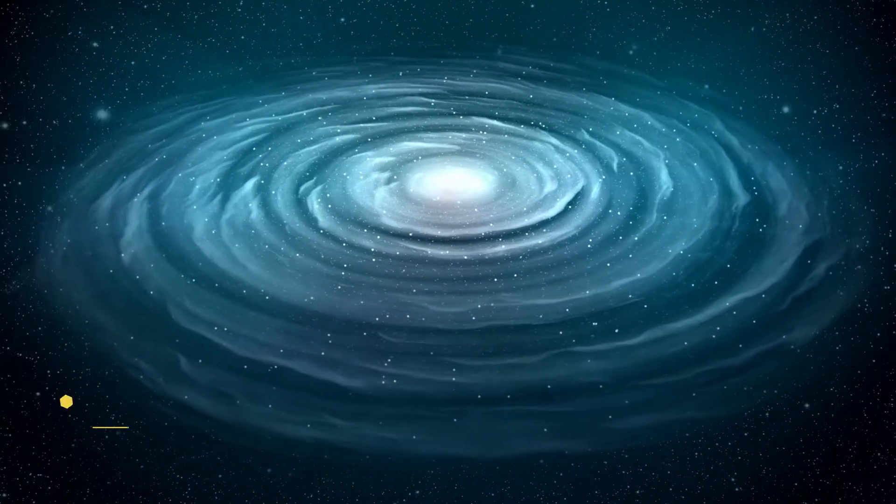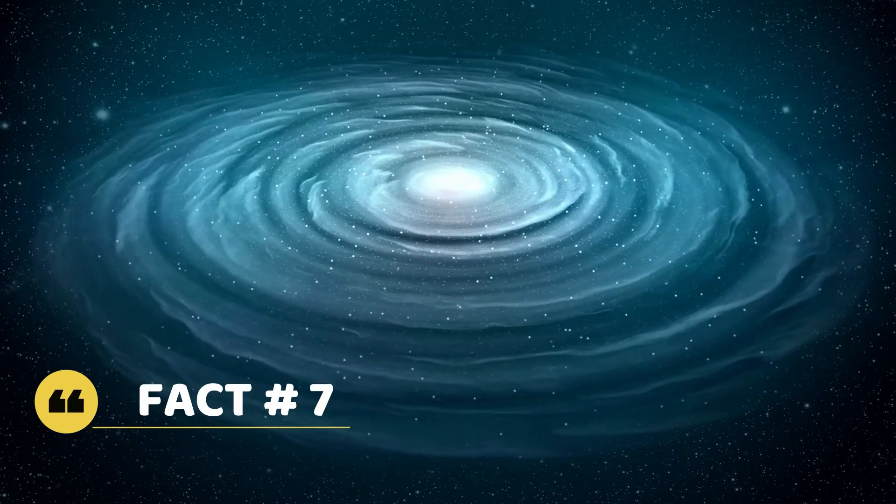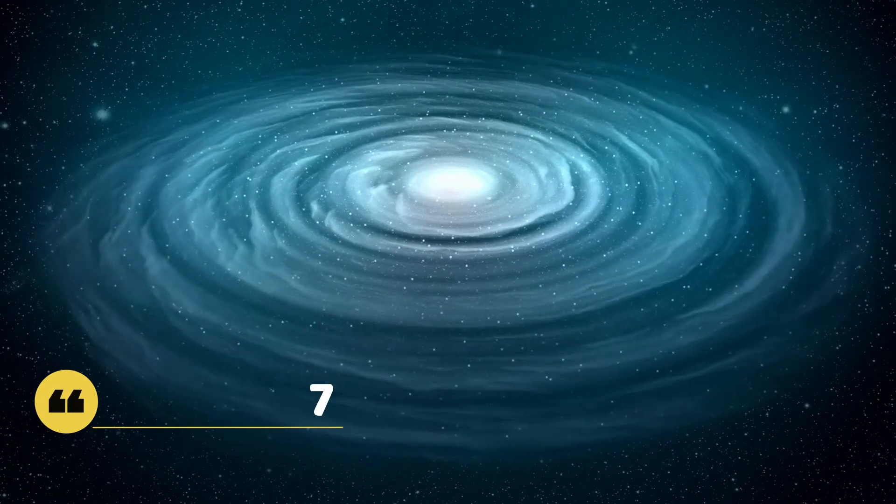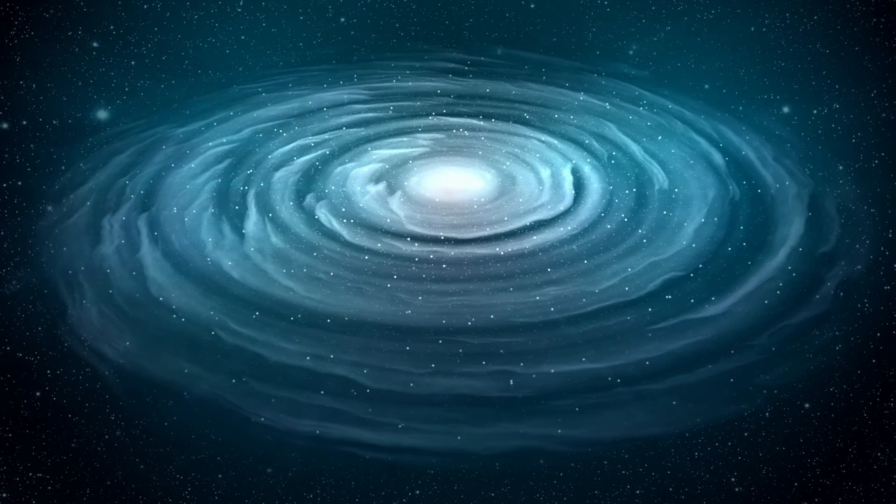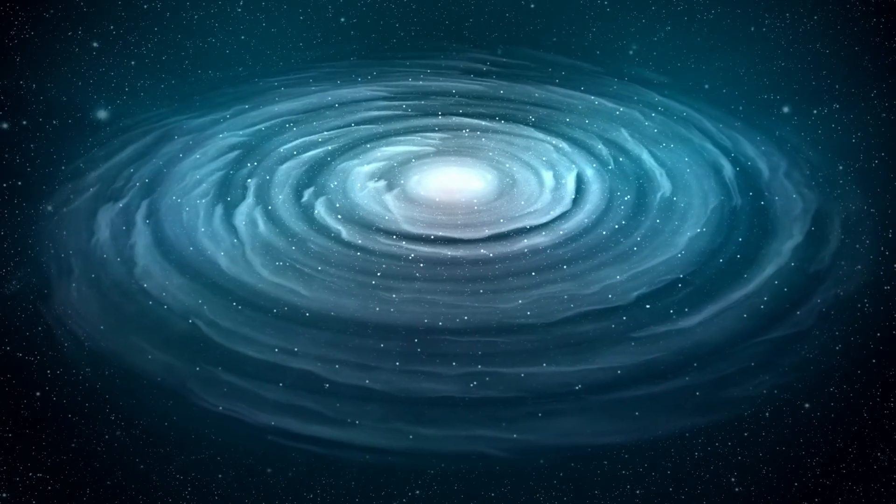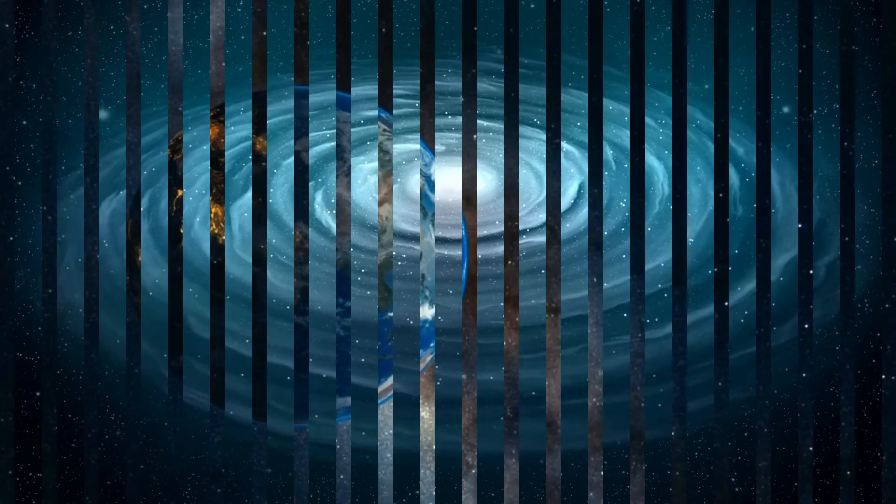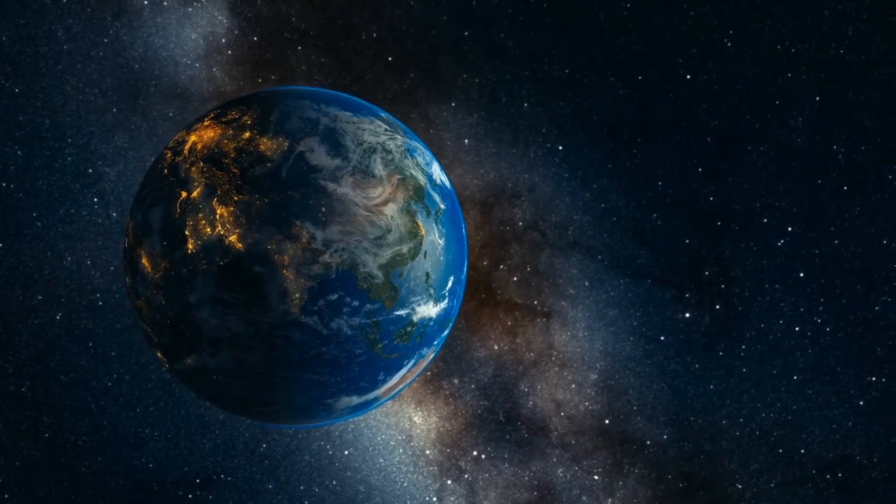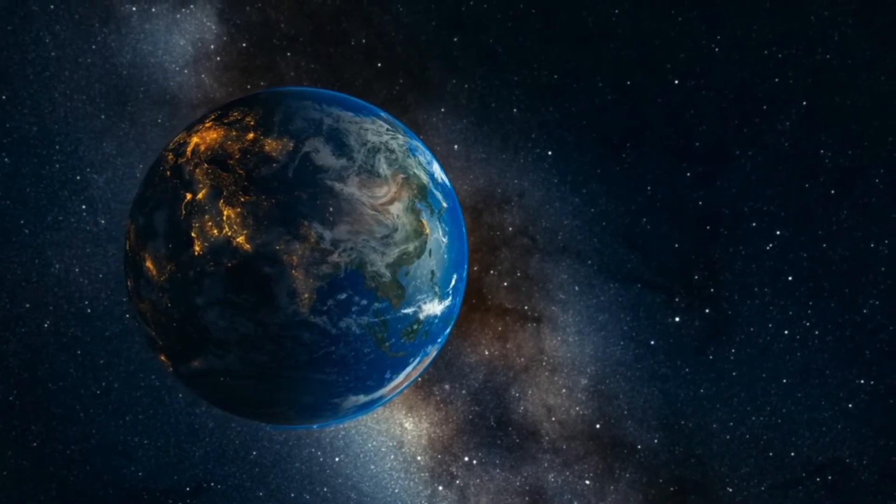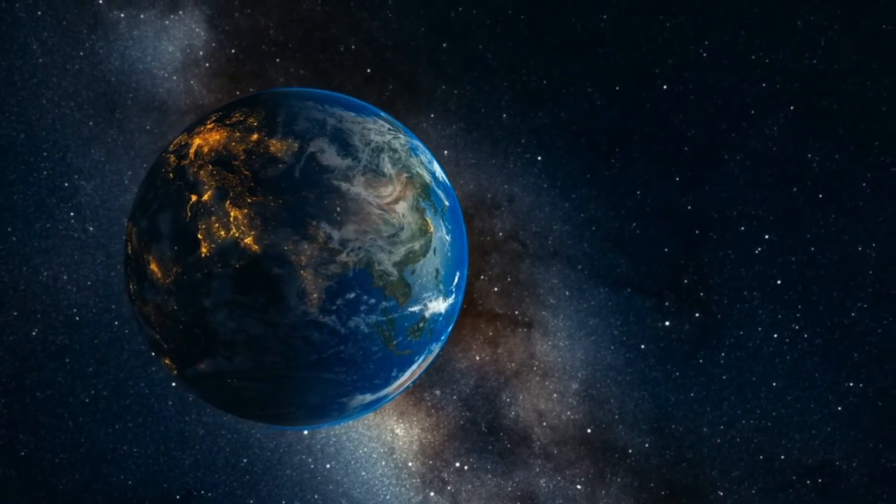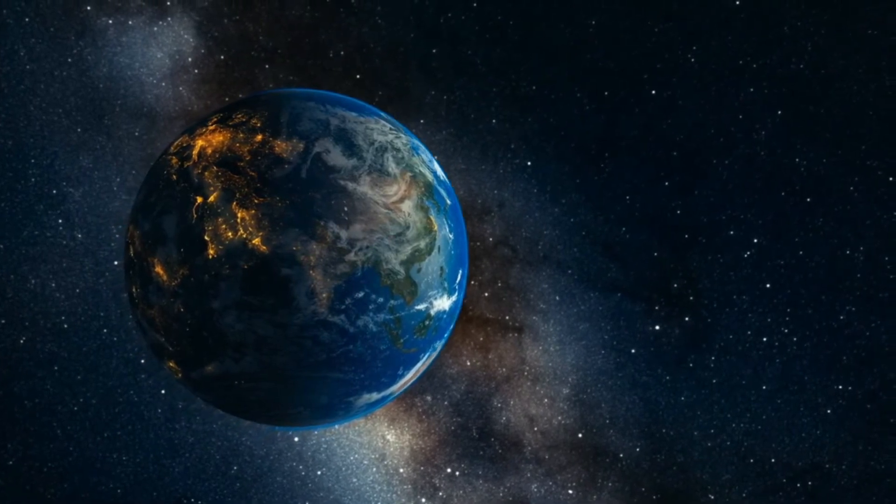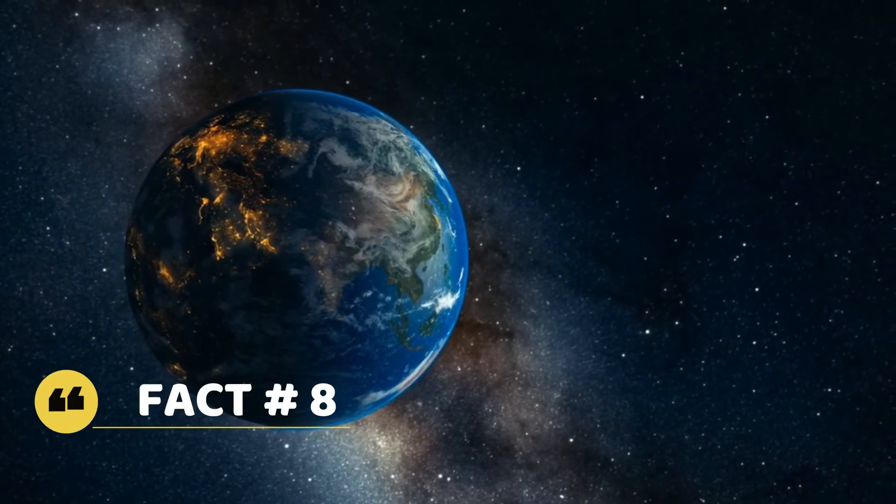Fact number seven: The closest black hole is probably not 1600 light years away. V4647 Sagittarii was thought to be 1600 light years away but is further away than expected. Scientists now believe that this black hole is about 20,000 light years away.